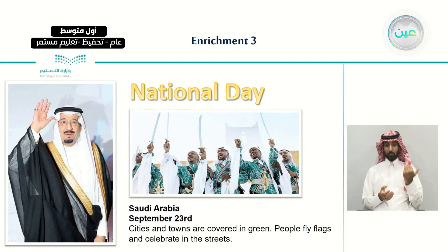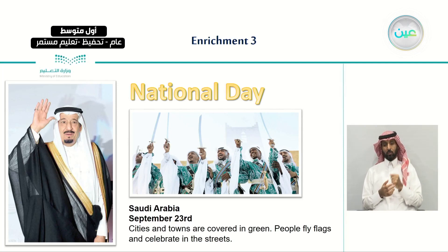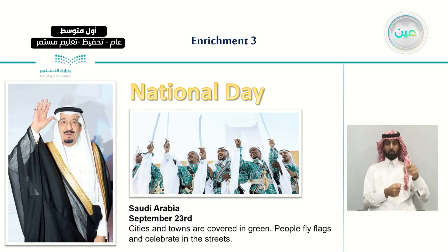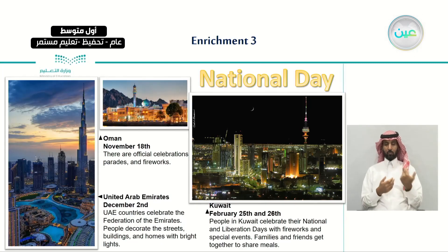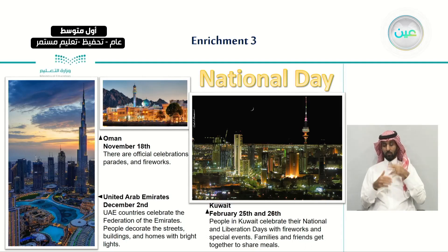For example, the National Day in Saudi Arabia is on September 23rd. The celebrations and practices people usually do on that day include cities and towns being covered in green, people flying flags and celebrating in the streets. As for Oman, they have official celebrations, parades and fireworks.